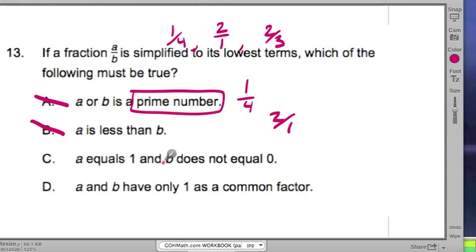C: a is equal to 1 and b does not equal 0. Okay, that would work if it was like 1/4th, but what about 2/3rds? Actually, a is clearly 2, which is clearly not equal to 1, and obviously b is not equal to 0. This is the problem here: a doesn't have to equal 1, so we cross it off.